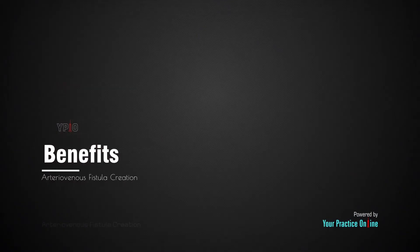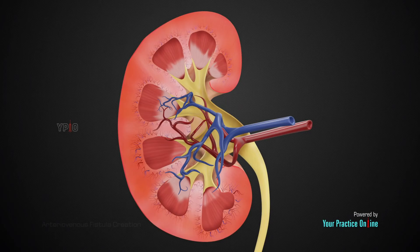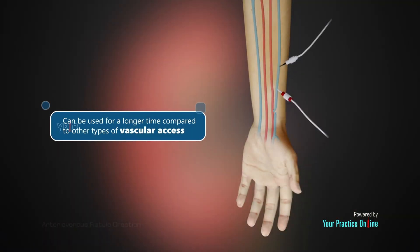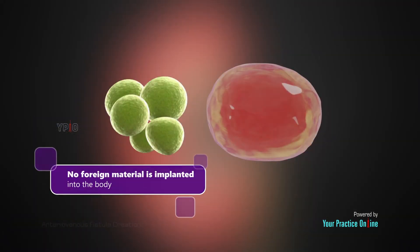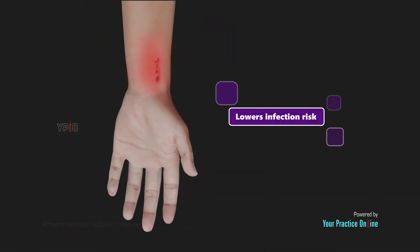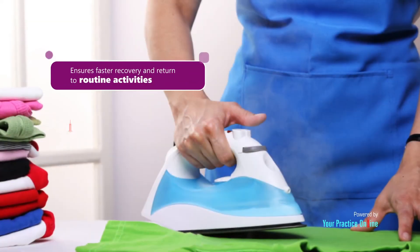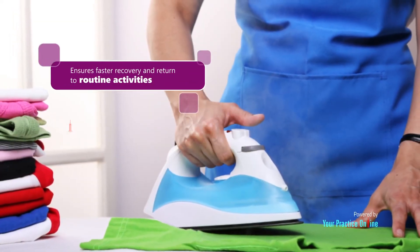Some of the benefits of an AV fistula in the treatment of end-stage renal failure include: it can be used for a longer time compared to other types of vascular access; no foreign material is implanted into the body; it optimizes blood flow for effective hemodialysis while minimizing treatment time; lowers infection risk; can be performed in the outpatient setting; and ensures faster recovery and return to routine activities.